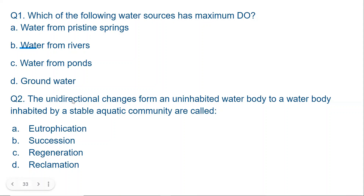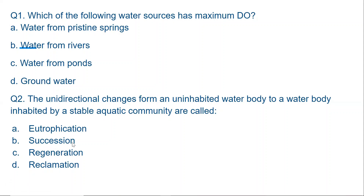Because first of all it's a unidirectional, one-directional change from an uninhabited water body to a water body inhabited by a stable aquatic community. Whenever the word 'stable' is applied, the answer is succession. When it's an unstable aquatic community — which changes, dies, causes reduction in D.O., and kills the water body — that is eutrophication. Eutrophication is unstable, but succession is stable.